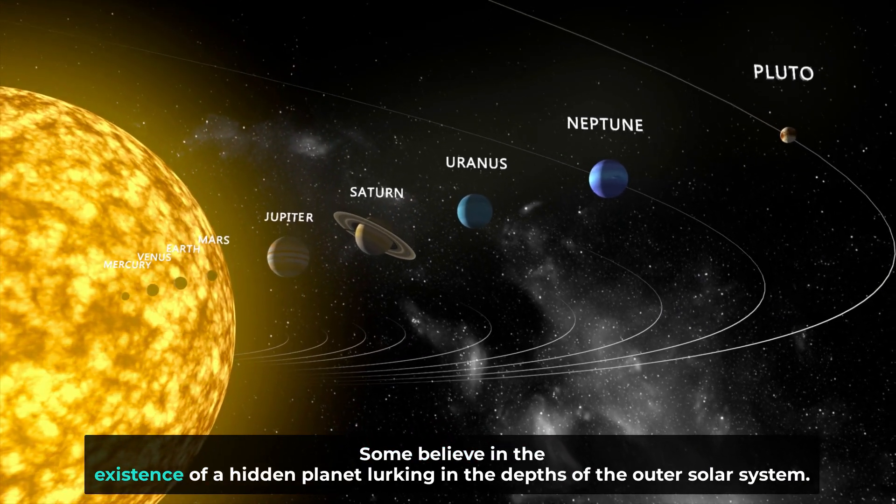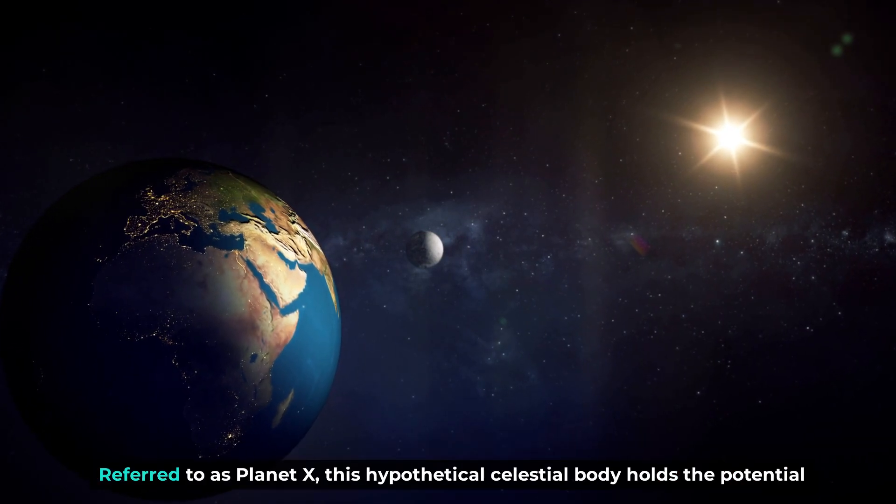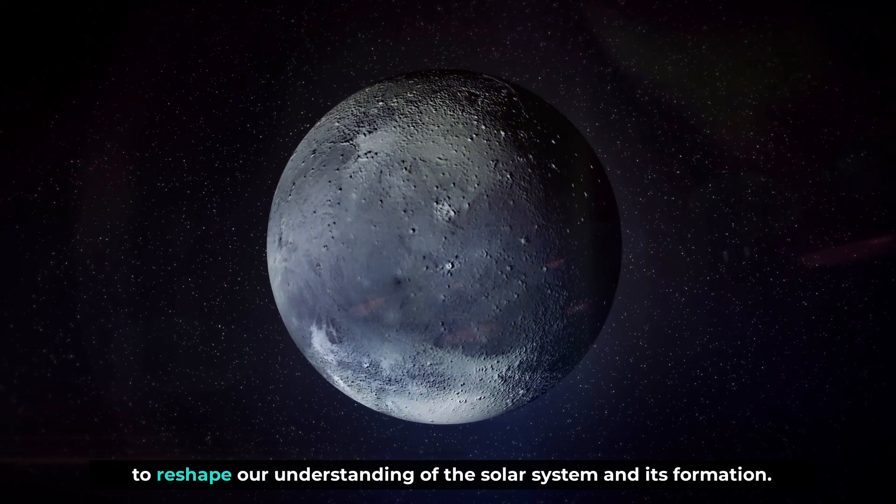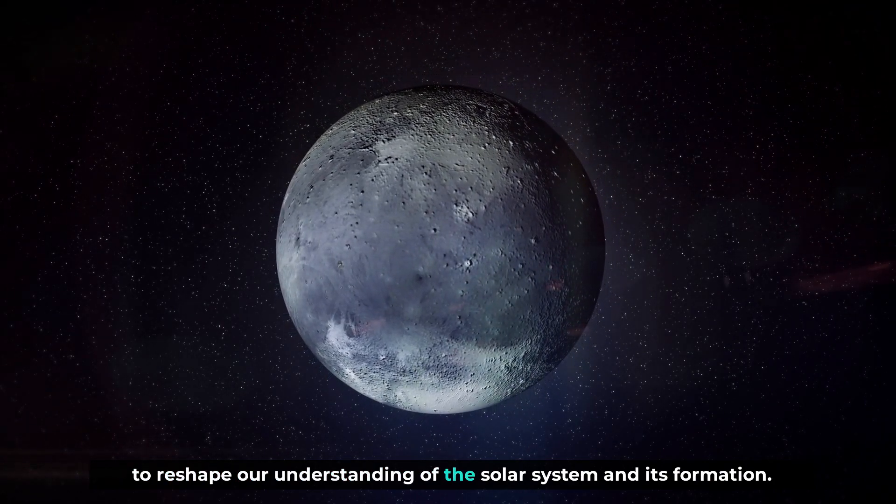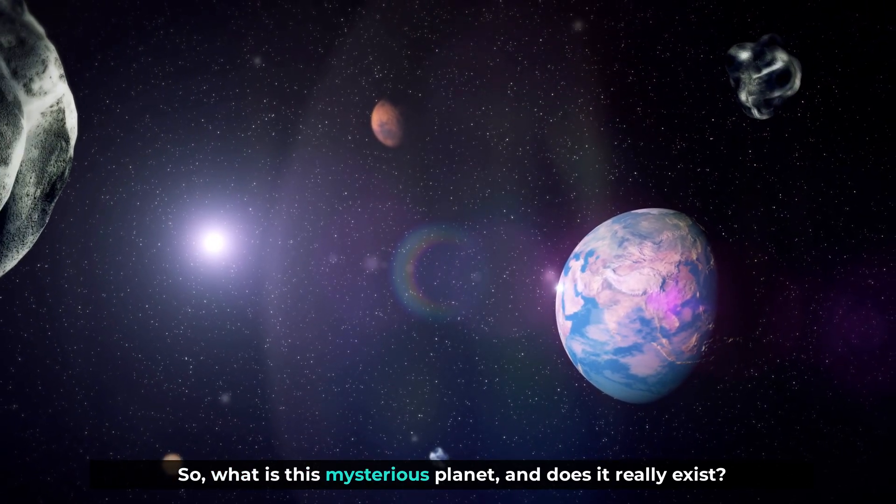Some believe in the existence of a hidden planet lurking in the depths of the outer solar system. Referred to as Planet X, this hypothetical celestial body holds the potential to reshape our understanding of the solar system and its formation. So, what is this mysterious planet, and does it really exist?